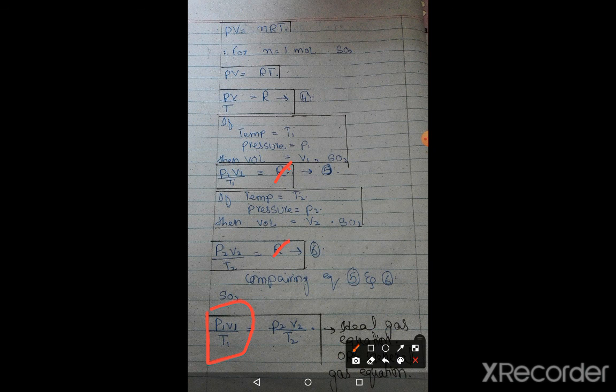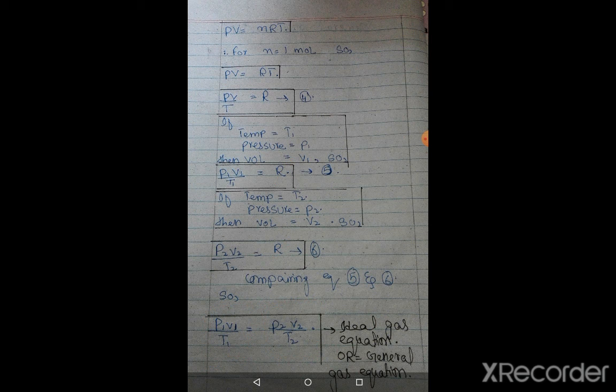Both are equal, so left side is equal to right side. P1V1 upon T1 is on the left side.